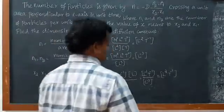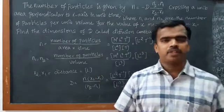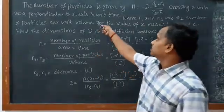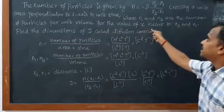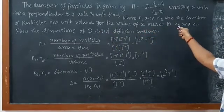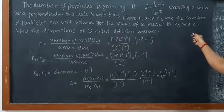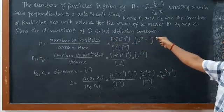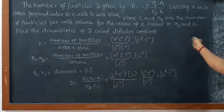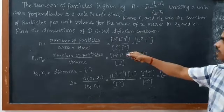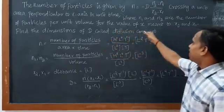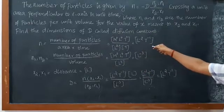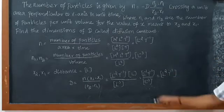Welcome to our classroom. The next problem in dimension analysis: the number of particles is given by n equals minus d times (n2 minus n1) divided by (x2 minus x1), crossing unit area perpendicular to x-axis in unit time, where n1 and n2 are the number of particles per unit volume for the values of x equal to x2 and x1. Find the dimension of d, called the diffusion constant.